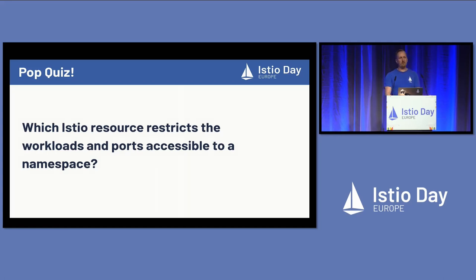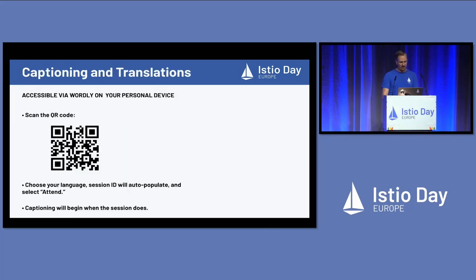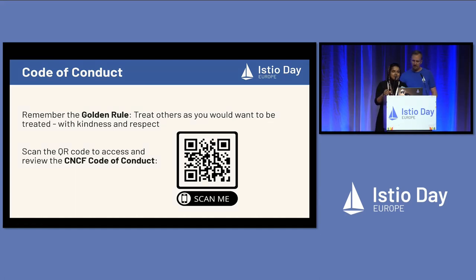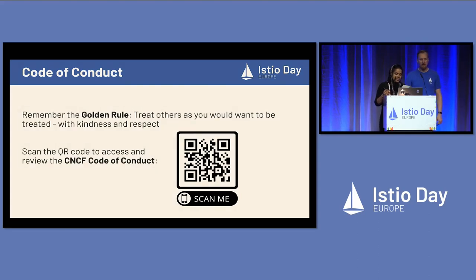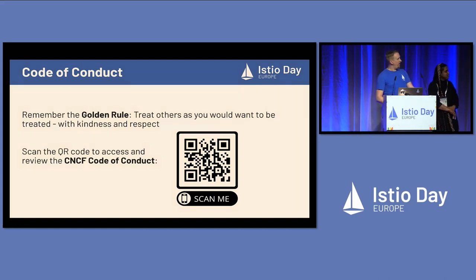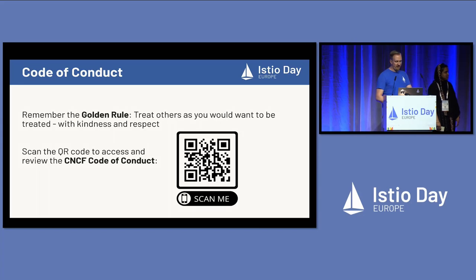Thank you all for participating. If some of these questions stumped you, hopefully before the end of the afternoon you'll have gotten more information on Istio and how you can use it. You can access our transcripts for the hearing impaired and our code of conduct here. Also, the CNCF gift vouchers — please make sure you use them at the venue itself, as they cannot be used in the online store. John Howard is a staff engineer at Google and Christian Posta is field CTO at solo.io. They've both been around in the community for a long time and are here to share their work on Istio's ambient mode. Come on up.